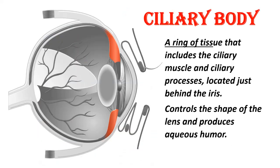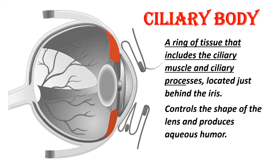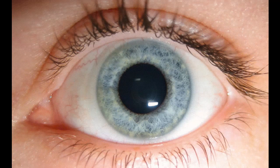Ciliary body: A ring of tissue that includes the ciliary muscles and ciliary processes, located just behind the iris. It controls the shape of the lens (accommodation) and produces aqueous humor.